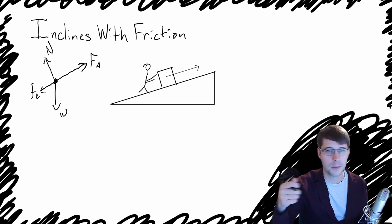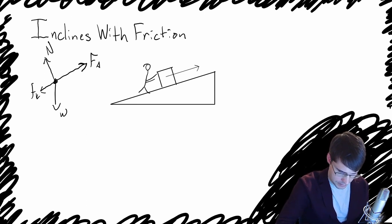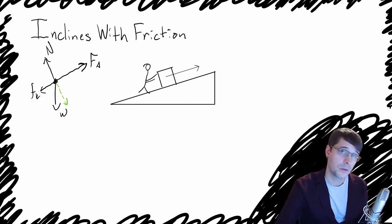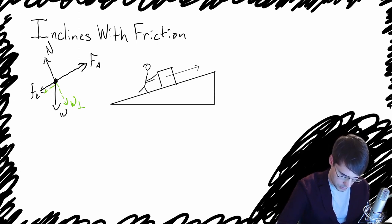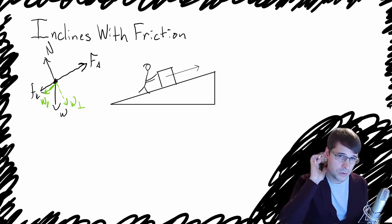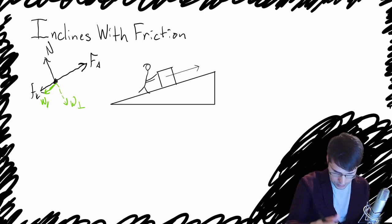So we're going to break the weight up into its components. We've got the part of the weight that is pointing perpendicular to the surface — we'll call that weight perpendicular. And we've got another part of the weight that is pointing down the hill — we'll call that weight parallel. Now that we have those two weight components drawn in, we're going to basically ignore the straight-down part of the weight and erase it from our force diagram.